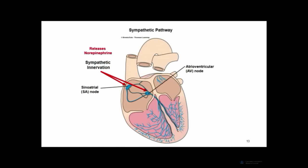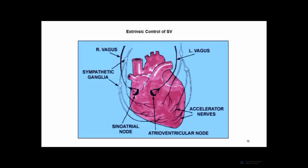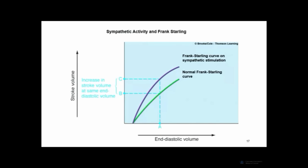Heart rate and stroke volume are controlled independently. The heart muscle has a unique property: the resting length is not where you produce the greatest contraction. The more you fill the heart, the more stretched the cardiac muscle gets, and the greater the contractility it can generate. So the more you fill the heart, the higher the end-diastolic volume, and the greater the stroke volume. This relationship between end-diastolic volume and stroke volume is called the Frank-Starling relationship.